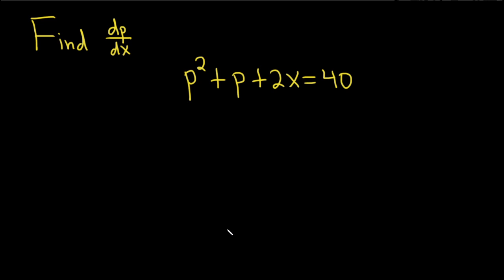In this problem, we have to find dp/dx using implicit differentiation. We're thinking of p as being a function of x, so we can say that p equals p of x.